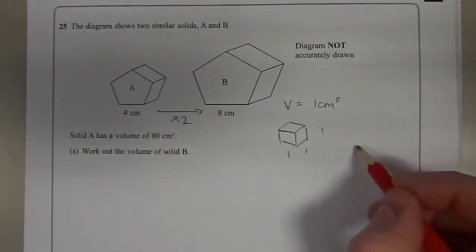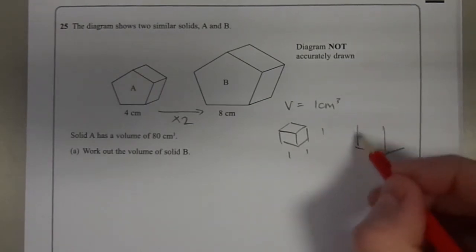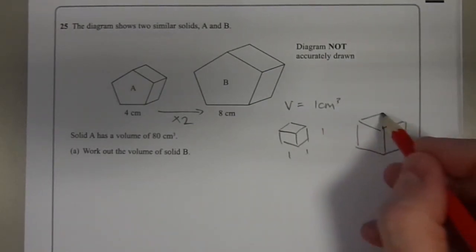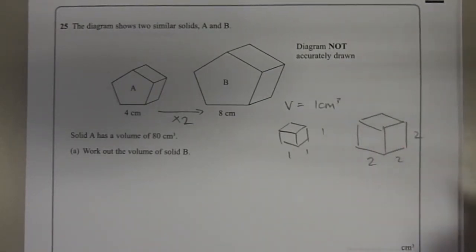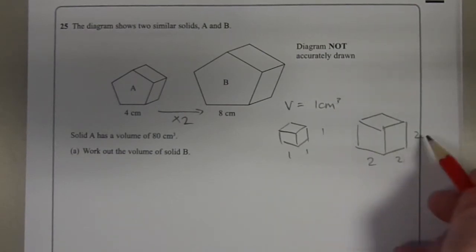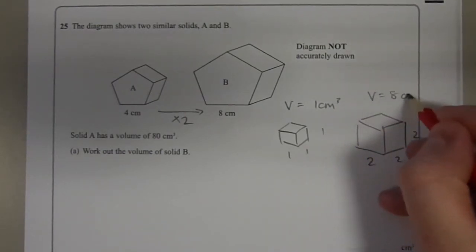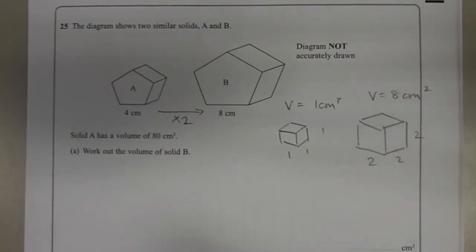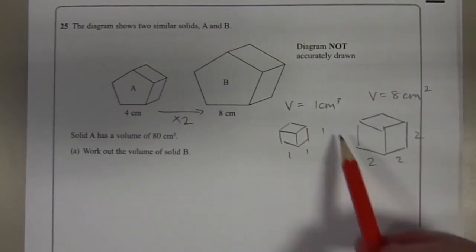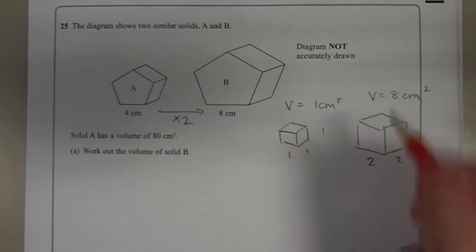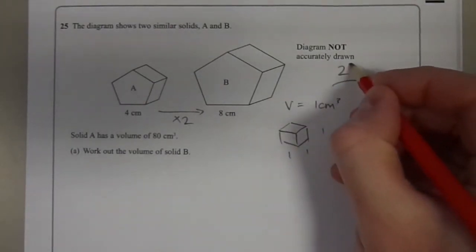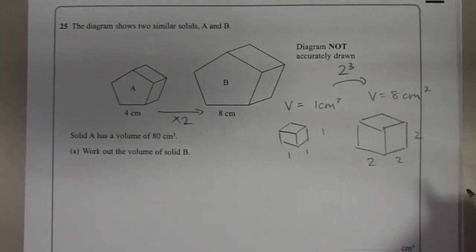If I make all of those sides two times bigger, and now I work out the volume by doing 2 times 2 times 2, I get a volume of 8 centimetres cubed. So notice, even though the lengths are twice as big, the volume is not twice as big. The volume is actually 2 cubed times as big.